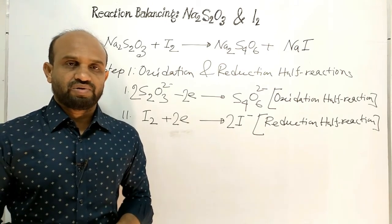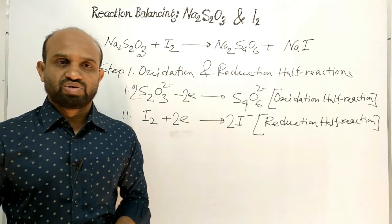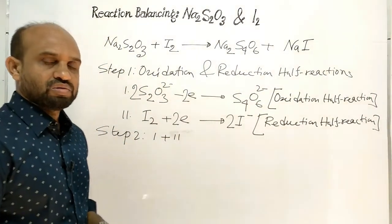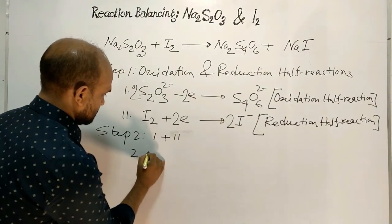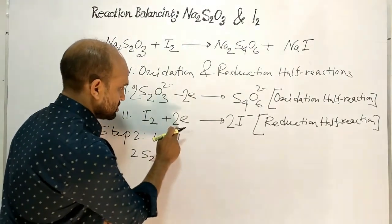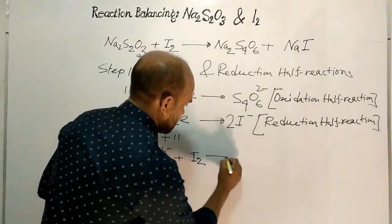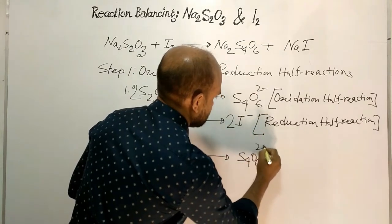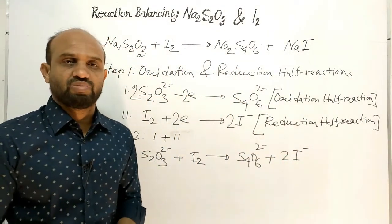Step 2: addition of equation 1 and equation 2. Adding both half reactions, the 2 electrons on each side cancel out. On the left side we have 2 thiosulphate ions plus iodine, and on the right side tetrathionate ion plus 2 iodide ions. This gives us the ionic equation of the redox reaction.